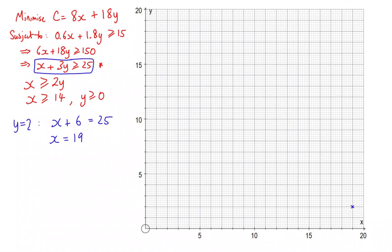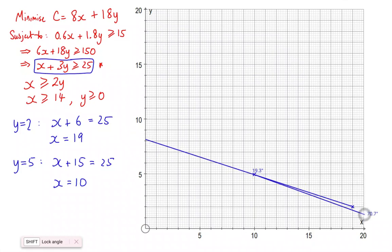Let's try another point. Let's try y is equal to 5. When y is equal to 5, we're going to have x plus 15 is equal to 25, so that means that x would be equal to 10. So 10 and 5 is that point there. I want a line going through those two points, something like that. So we've got that first one.